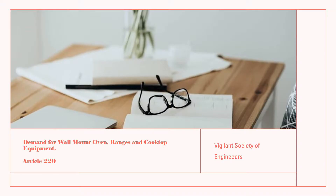Hello guys and welcome. We're doing a presentation on Article 220, covering wall ovens, ranges, and cooking appliances. This presentation was brought to you by the Vigilant Society of Engineers. Before we proceed, we want you to subscribe and give us a like, as we're trying to give you more videos like this. Go ahead, hit that subscribe button and give us a like.